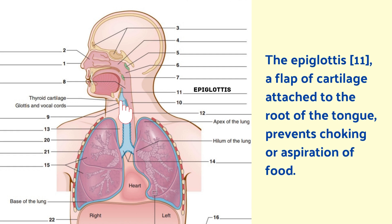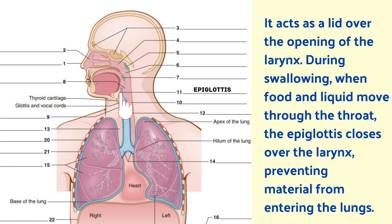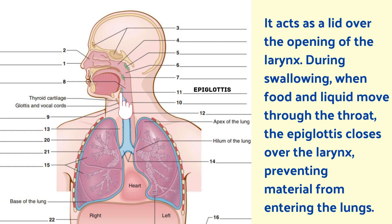The epiglottis is a flap of cartilage attached to the root of the tongue. It prevents choking or aspiration of food, acting as a lid over the opening of the larynx. During swallowing, when food and liquid move through the throat, the epiglottis closes over the larynx, preventing material from entering the lungs.